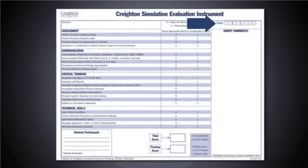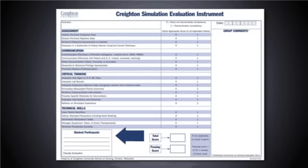For clarity, it will be most helpful if you have a copy of the Creighton SEI available as we progress through the remainder of this orientation. In the top right corner, there is a space for the date of the SCE, and at the top left, a space for the name of the SCE. On the bottom left, there is a section for the name of the student participants and the name of the faculty evaluator. The right column of the form is for anecdotal comments regarding the group performance.